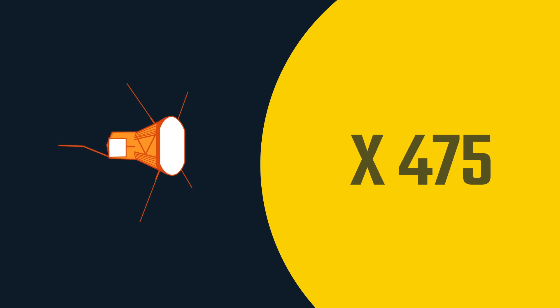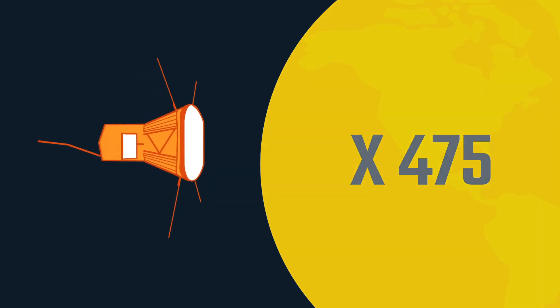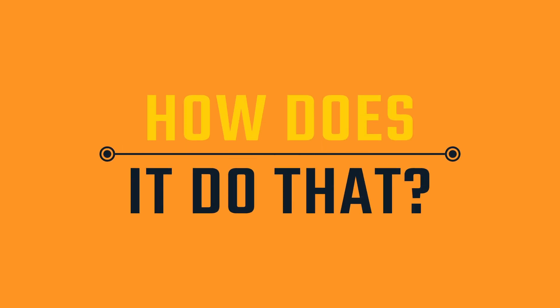At its closest passes, the spacecraft must survive solar intensity of about 475 times what it would experience while orbiting Earth. So how does the Parker Solar Probe keep its cool?